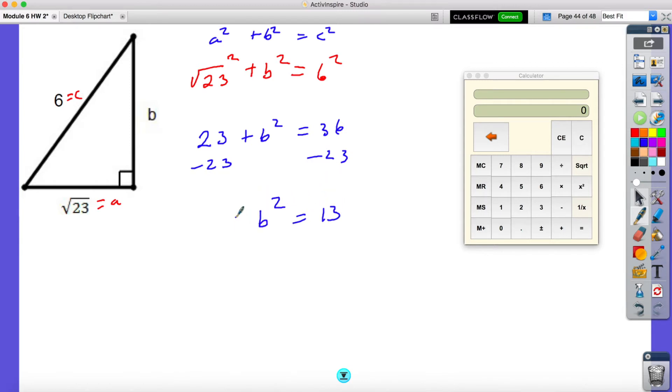I'm now going to subtract 23 on both sides to get B squared is equal to 13. Now in order to get B all by itself, I take the square root of both sides, and I will get B equals radical 13. This 13 is prime, so I cannot simplify this anymore. So this B value is just radical 13.